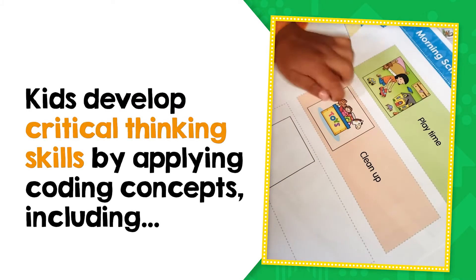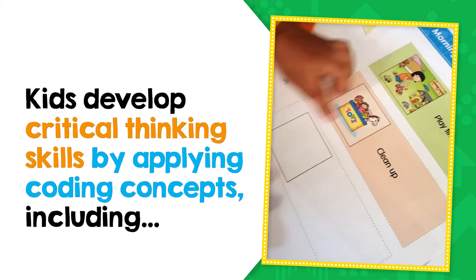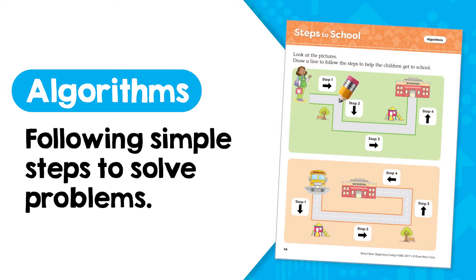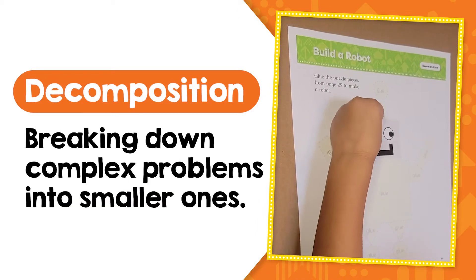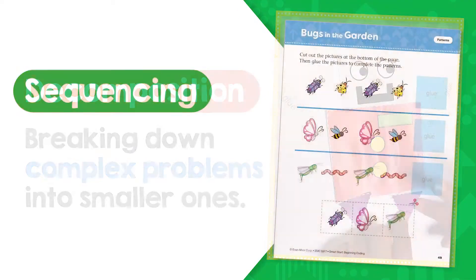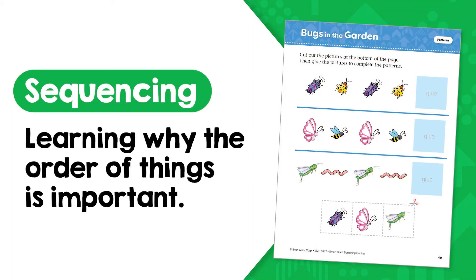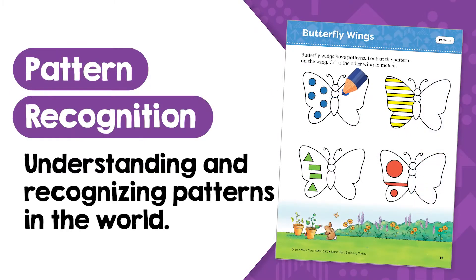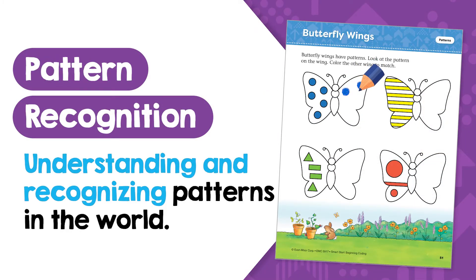Kids develop critical thinking skills by applying coding concepts, including algorithms — following simple steps to solve problems; decomposition — breaking down complex problems into smaller ones; sequencing — learning why the order of things is important; and pattern recognition — understanding and recognizing patterns in the world.